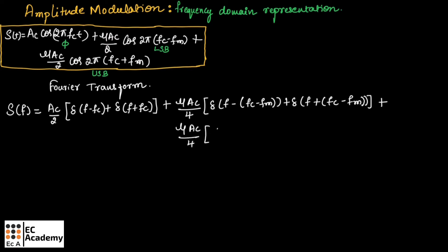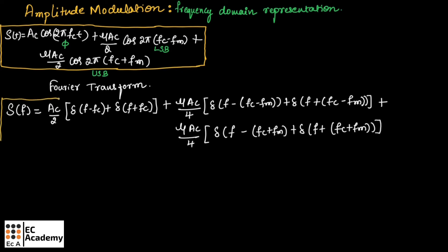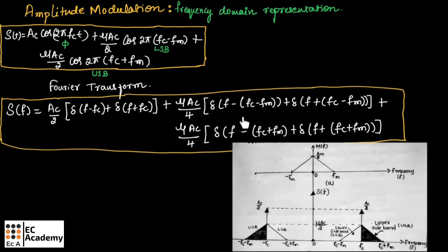The upper sideband terms are delta of (F minus Fc plus Fm) plus delta of (F plus Fc plus Fm). So this is the expression for AM wave in frequency domain. Now we need to write the spectrum representation of this equation.